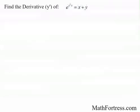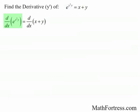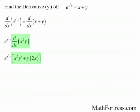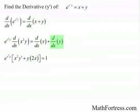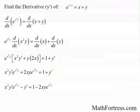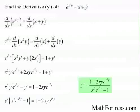Let's try the next one. Find the derivative of e raised to the power of x squared times y equals x plus y. We take derivatives of both sides. The derivative of e raised to the power of x squared times y requires a combination of the chain rule and the product rule. That gives us e raised to the power of x squared times y, times the quantity x squared times y prime plus y times 2x. The derivative of x is just 1 and the derivative of y is y prime. Getting all y prime terms to one side, factoring out y prime, and solving, the final derivative is 1 minus 2xye raised to the power of x squared times y, all over x squared times e raised to the power of x squared times y, minus 1.